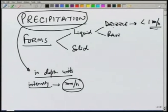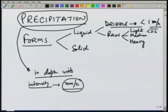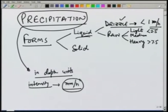If precipitation is falling at a rate of less than 1 millimeter per hour, we call it a drizzle. Rain can be classified as light, medium, and heavy. Light is typically less than 2.5 millimeters per hour, heavy is typically greater than 7.5 millimeters per hour, and in between we have medium. So the liquid precipitation can be classified as drizzle, light rain, medium rain, or heavy rain.